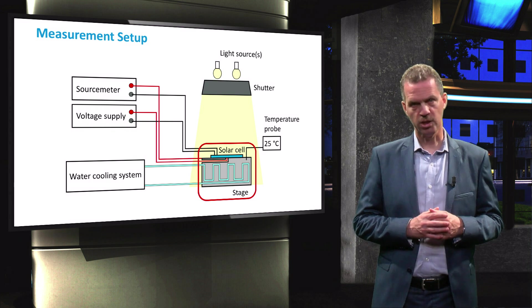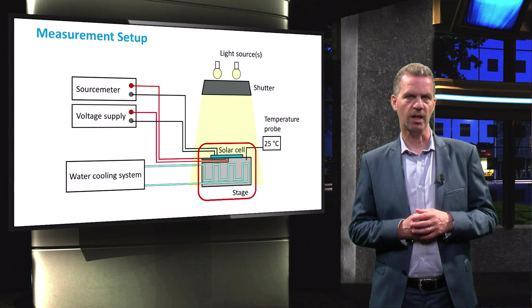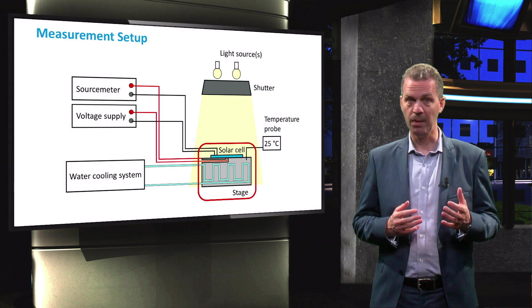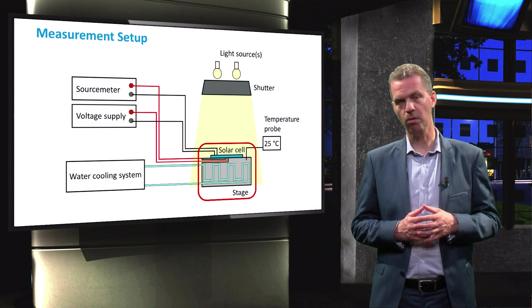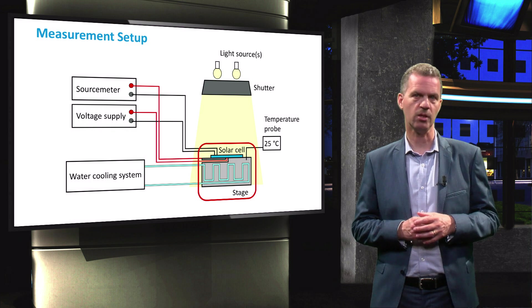The temperature of the stage is monitored by a temperature probe. The highest accuracy J-V curve is obtained by a 4-point probe measurement, meaning that separate sets of probing wires are used for supplying the voltage and collecting the current.